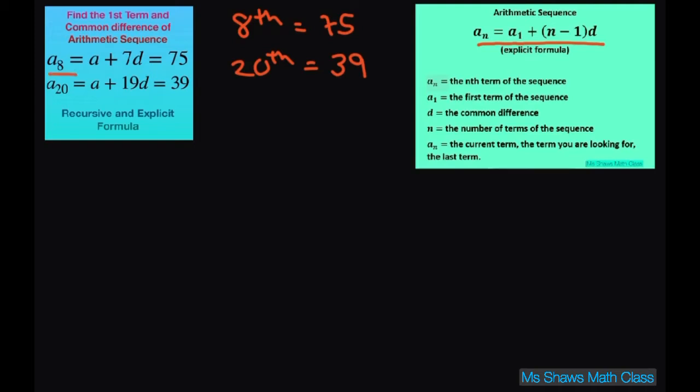And if I just look at this first one, that gives me my 8th term is my first term plus N minus 1 times D. Well, this N minus 1 is just your 8. Your N is 8. N equals 8.